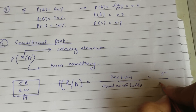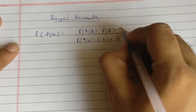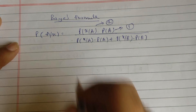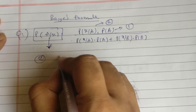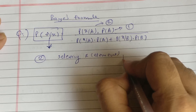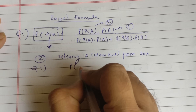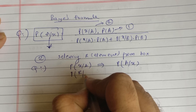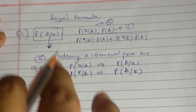So the answer is 5 upon (5 + 2), which is 5/7. In Bayes theorem, the first step is the normal probability and the second step is the conditional probability. The question will be exactly the opposite: if you know P(X|A), the question will ask for P(A|X). If you have P(red balls | box A), the question will ask for P(box A | red ball).